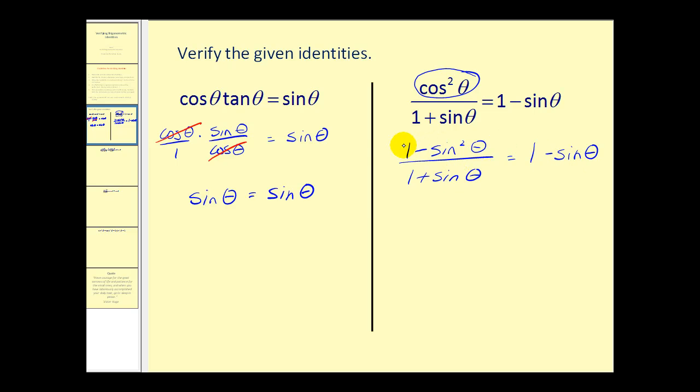And already the left side is looking more like the right side. And now our numerator is actually a difference of squares, and this can be factored. And the two factors would be one plus sine theta and one minus sine theta.